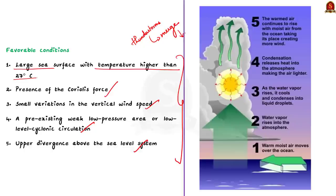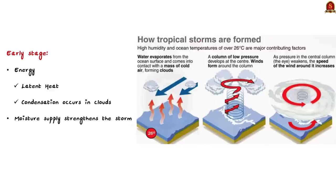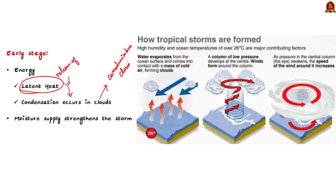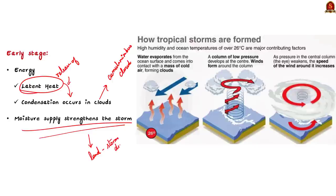Talking about the early stage of the cyclone, the energy that intensifies the storm comes from the release of latent heat from the condensation process. The condensation process occurs in the cumulonimbus clouds surrounding the center of the storm. With continuous supply of moisture from the sea, the storm is further strengthened. On reaching the land, the moisture supply is cut off and the storm dissipates. The place where a tropical cyclone crosses the coast is called the landfall of a cyclone. But if the ocean can supply more moisture, the storm will reach a mature stage.